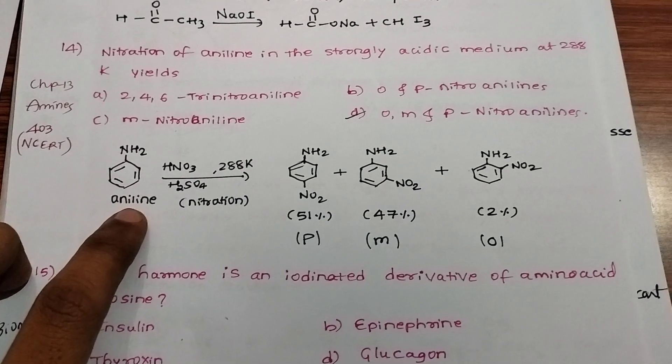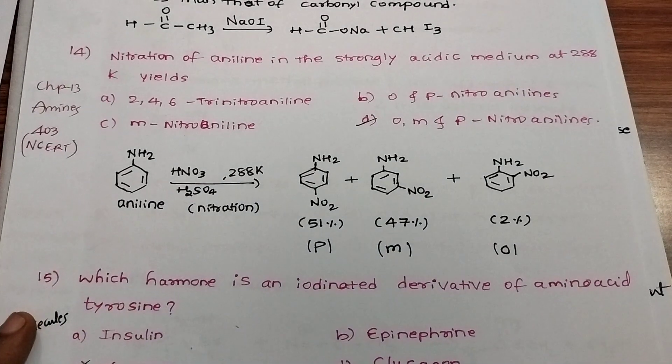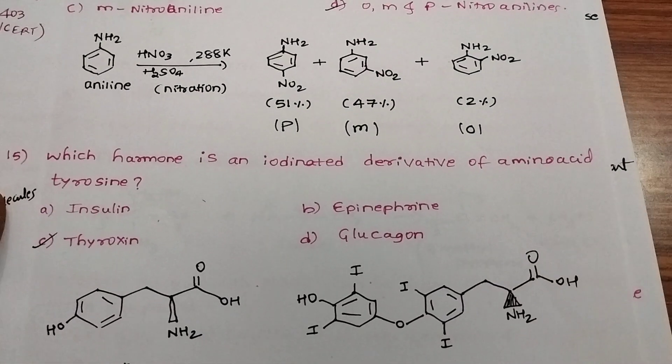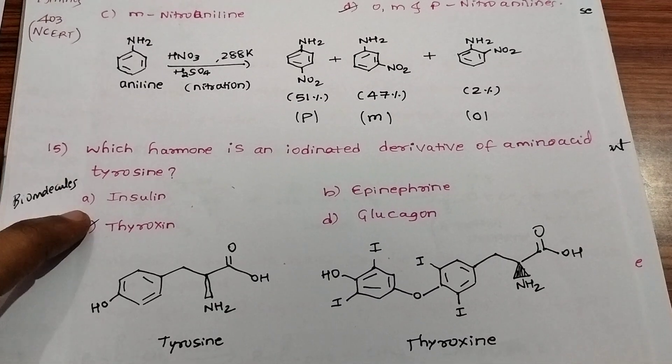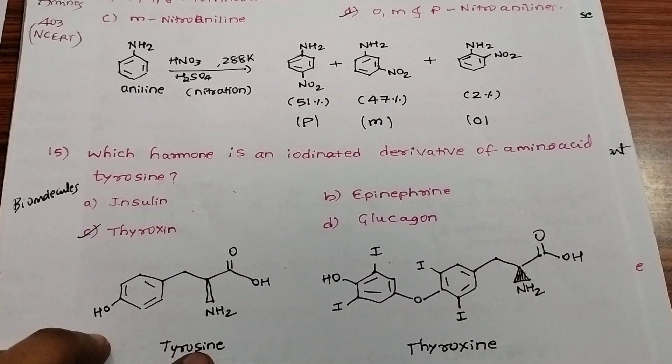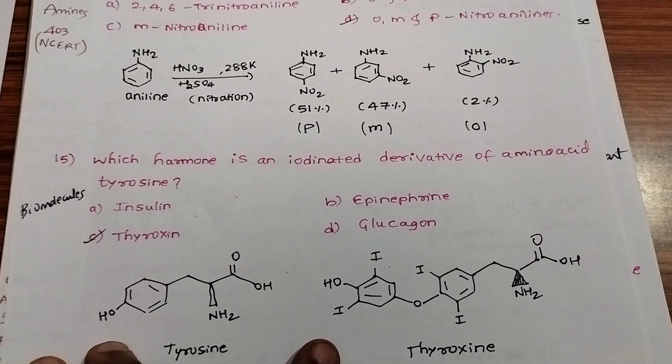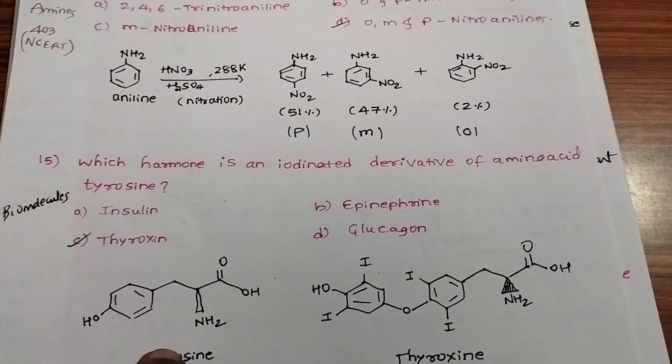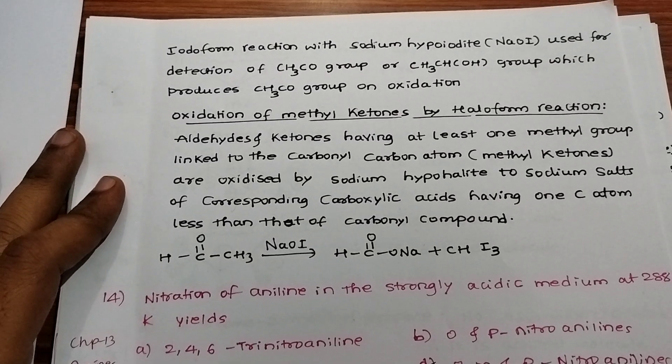Which type of hormone is an iodinated derivative of amino acid tyrosine? Tyrosine, on iodination, forms thyroxine hormone, so the answer is thyroxine. Friends, I hope you understood. Please subscribe to my channel GPS Star CTT. Thank you, friends.